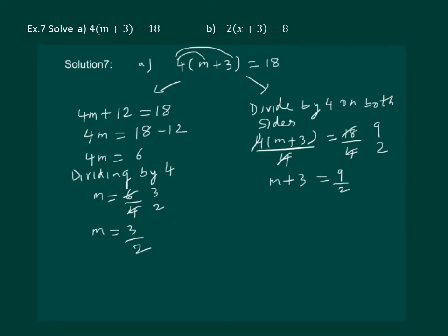Now let us transpose this 3. We get m equal to 9 by 2 minus 3. Now it remains to solve the right side. That can be done using rational numbers. We get 2 as LCM and 9 minus 6. This will give us 3 by 2 as the required answer. So we can use any technique and finally we should reach the same answer.